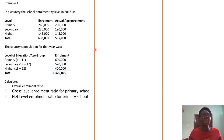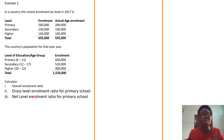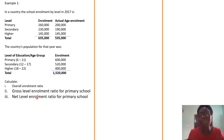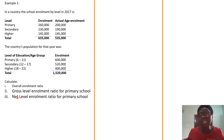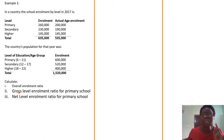What are we expected to do? First, calculate the overall enrollment ratio. Second, calculate the gross level enrollment ratio for primary school, and calculate the net level ratio for primary school. So we are going to calculate the overall, gross, and net.